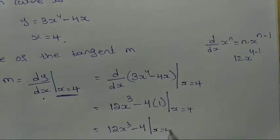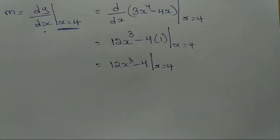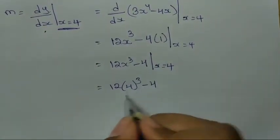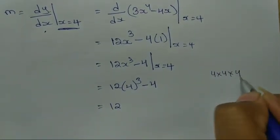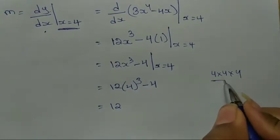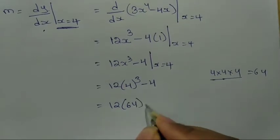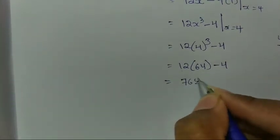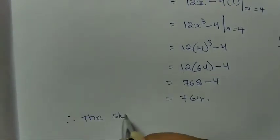Now substituting x = 4: 12(4)³ − 4 = 12 × 64 − 4. Now 4³ = 64, so 12 × 64 = 768, and 768 − 4 = 764.